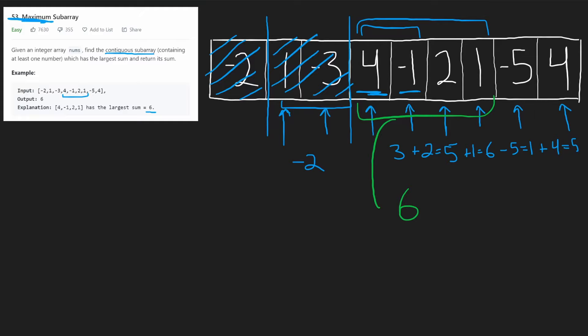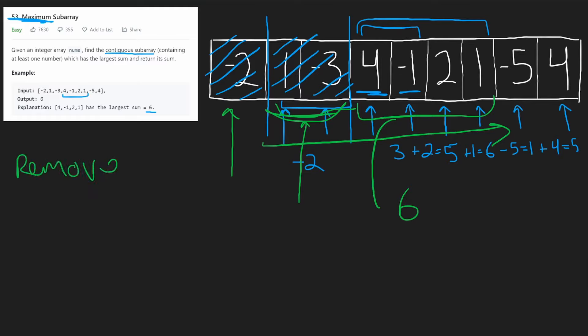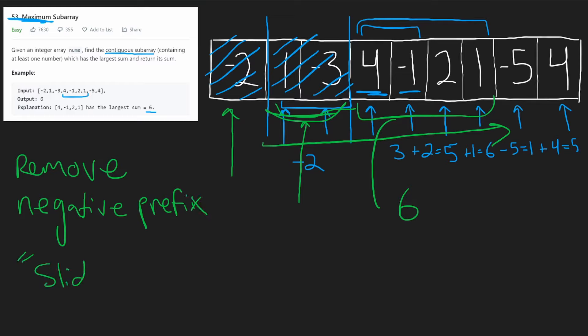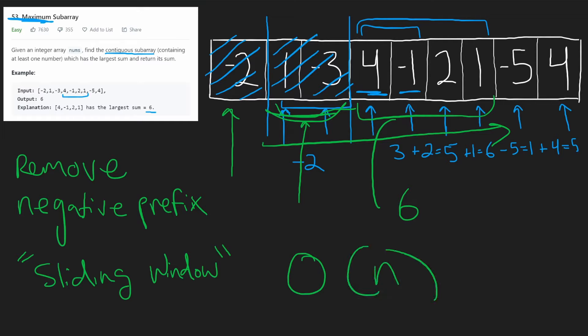This is a linear time algorithm — it's kind of like a sliding window. We keep incrementing our right pointer as we go through the array, but our left pointer keeps getting shifted whenever we have a negative prefix, like this negative two, or the negative two portion comprised of two elements. Anytime we get a negative prefix, we remove it. The overall time complexity is O(n), and we don't need any extra memory — we just go through the array removing any negative prefix as we compute the total sum.